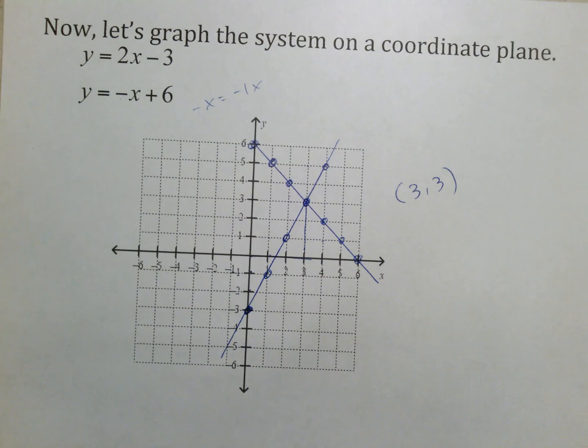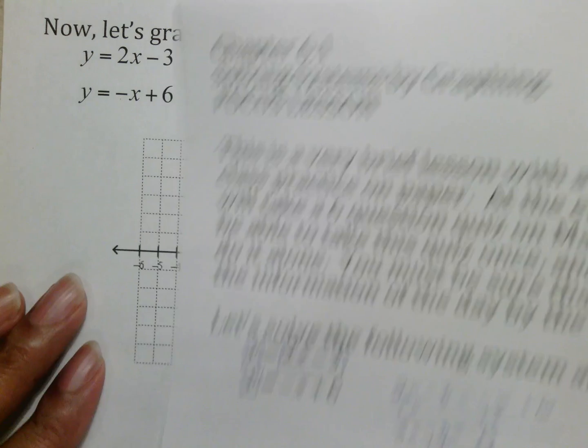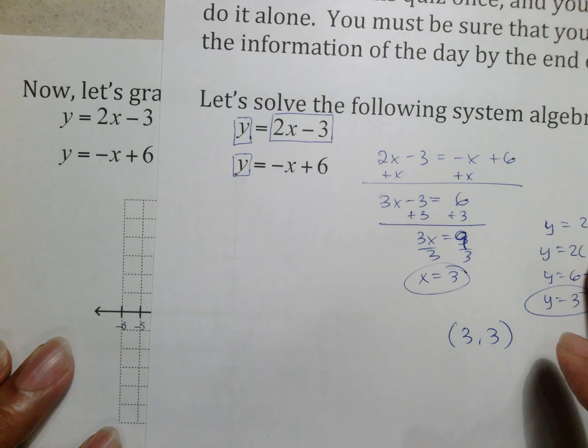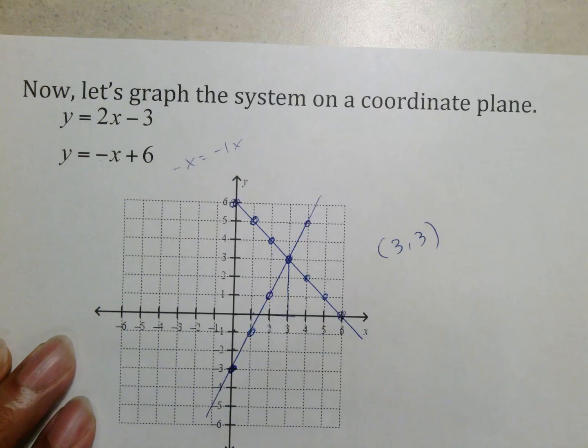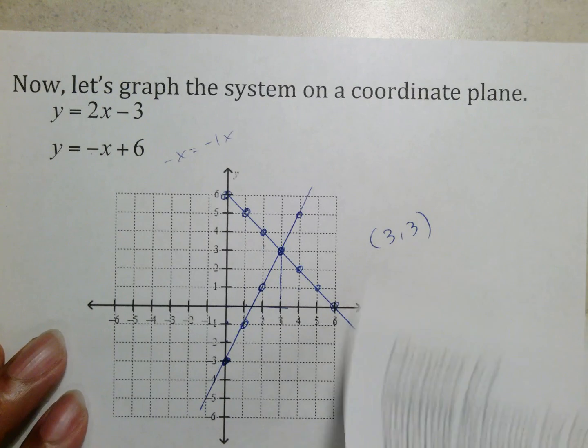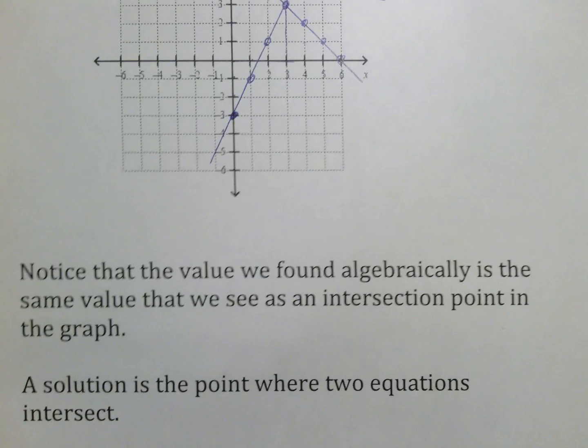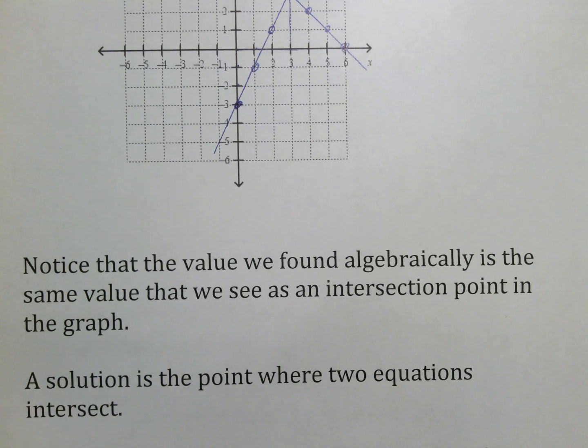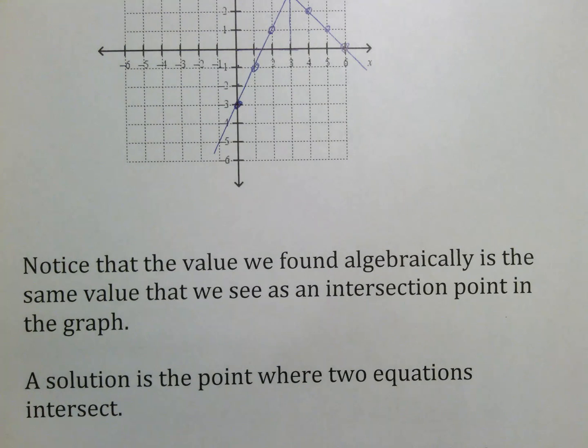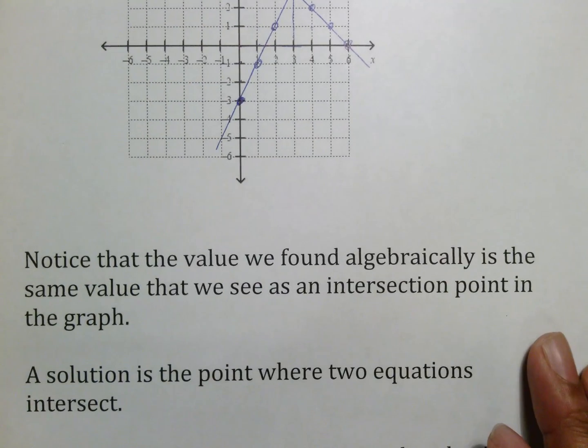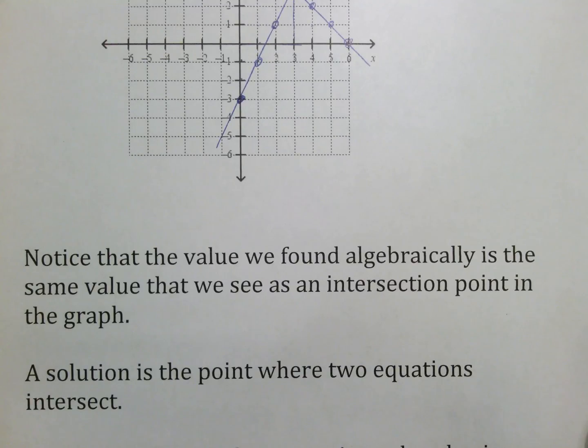Now looking back at what you did earlier, and notice that this is the same equation that we just did, that we solved using algebra and got the answer of 3, 3. That when we graphed them, we saw that they meet at 3, 3. And that is because a solution, by definition, is the point where two equations intersect. So whenever you're asked later on to find a solution of a system, and it's given in graph form, you can just see where those two lines cross. And that ordered pair would be what the solution actually is, without you having to do any kind of extra work.